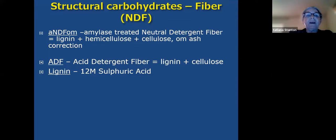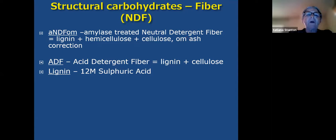Nowadays we use NDF — neutral detergent fiber — which includes lignin, hemicellulose, and cellulose. Initially it also included ash and proteins bonded to fiber. If you see 'OM' on the NDF, that means it was adjusted to remove ash. Amylase is an enzyme used to remove bonded proteins. You'll sometimes see 'A-NDF,' and nowadays almost all NDF values on feed or forage samples are already adjusted for amylase and organic matter.